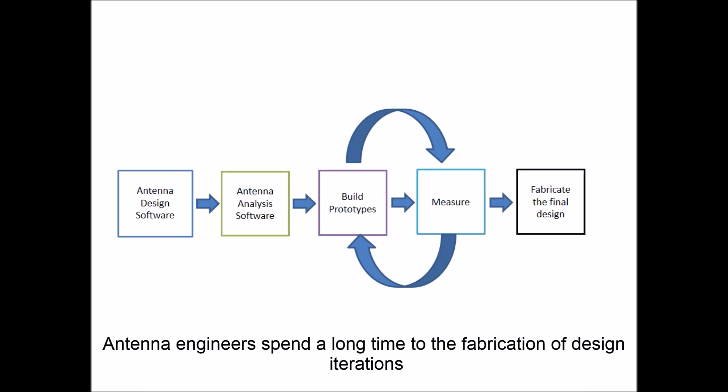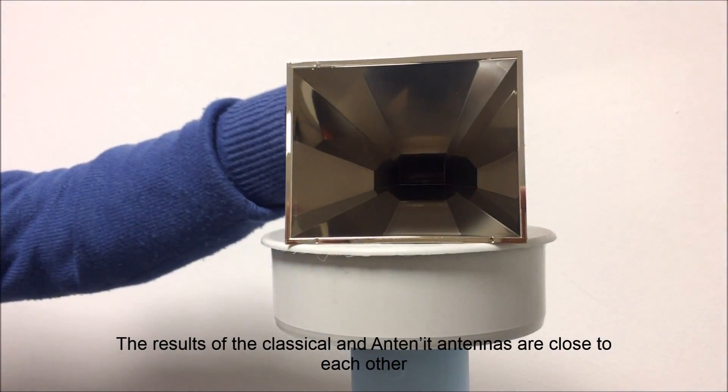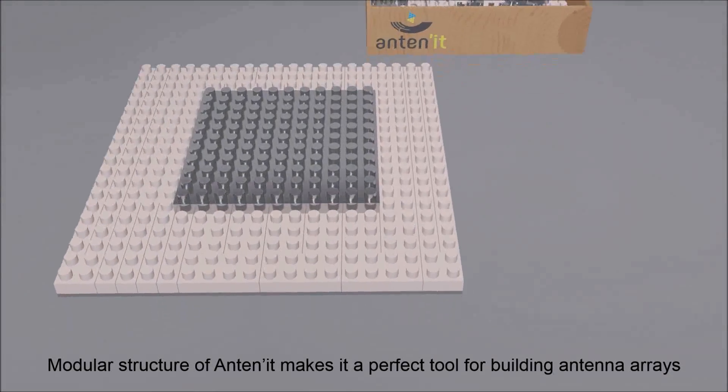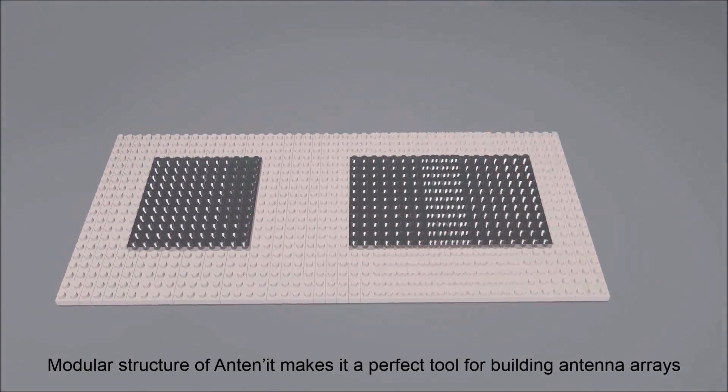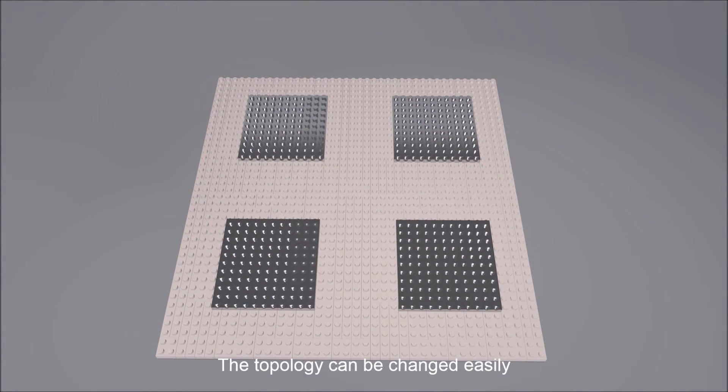Antenna engineers spend a long time on the fabrication of design iterations. Antennate allows rapid prototyping of your design. This prevents the waste of cost and time. The results of the classical and Antennate antennas are close to each other. Modular structure of Antennate makes it a perfect tool for building antenna arrays. The topology can be changed easily.